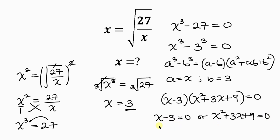For the first case, it is easy to get a value for x. Moving negative 3 to the right, it becomes positive 3, so x equals 3 — the same solution the first method gave. To get the other solutions of x, we turn to our second case. This is a quadratic equation, but it cannot be factorized, so we have to use the quadratic formula.